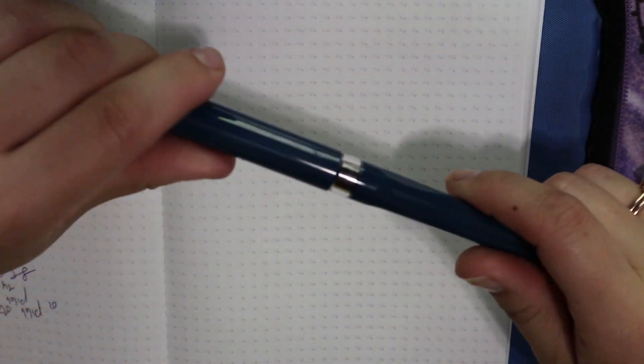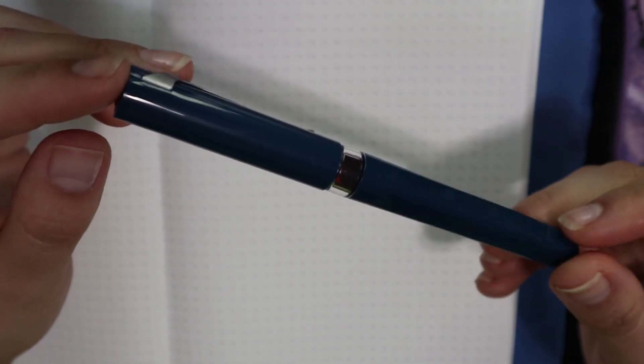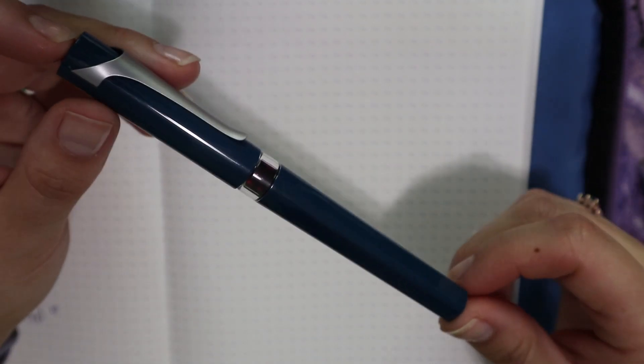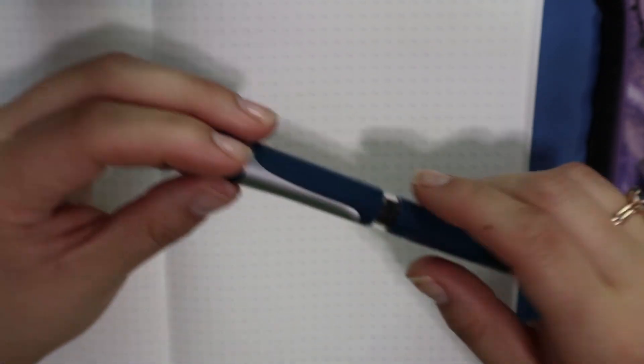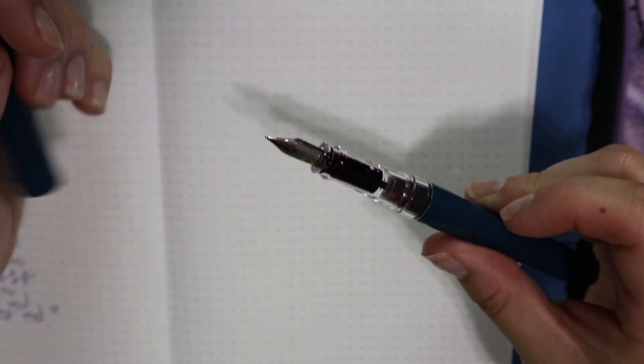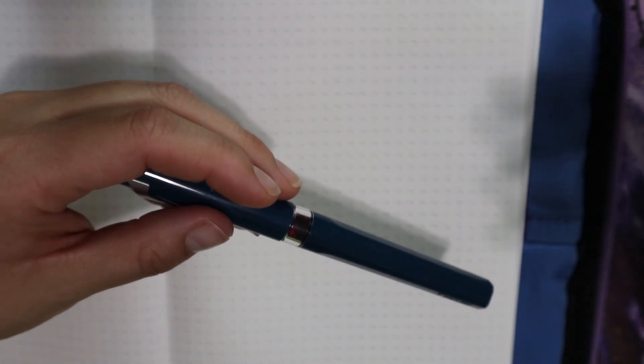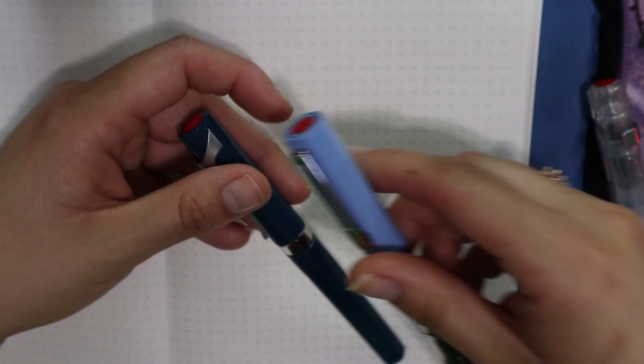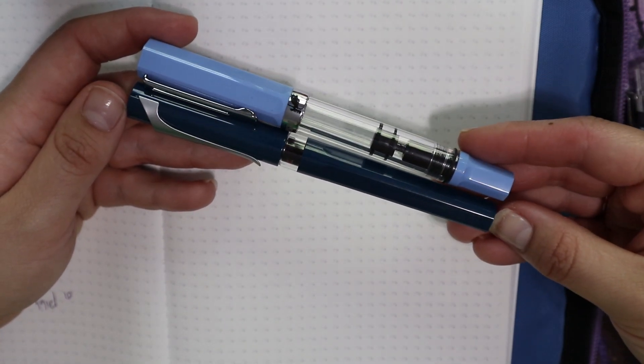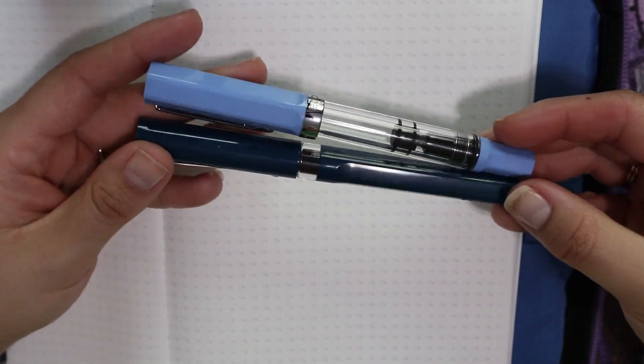All right, here we are with a close-up shot of the TWSBI Swipe, and this is one of TWSBI's offerings, one of their few offerings with a snap cap, which is quite nice, and I grabbed some other TWSBIs to show you the difference. So you guys know I love Ecos, and size-wise, the Swipe is very close to an Eco. Now the Eco is a piston filler and the Swipe is not, but I'll talk about that in a second.